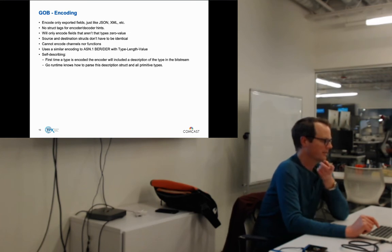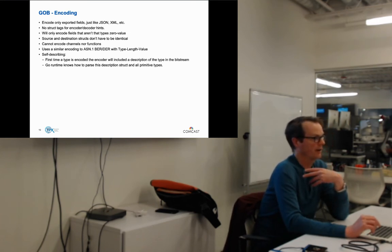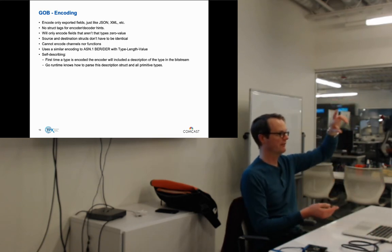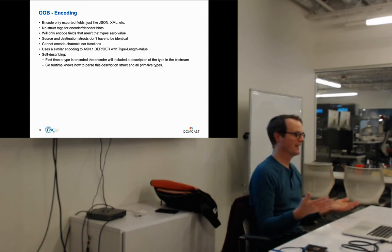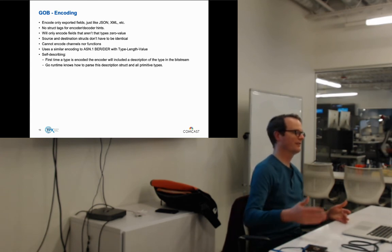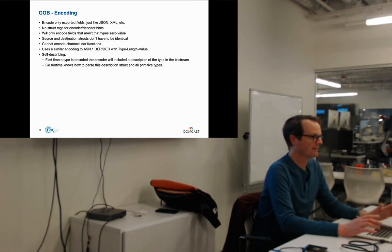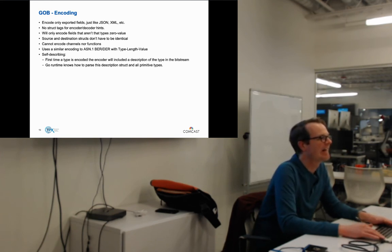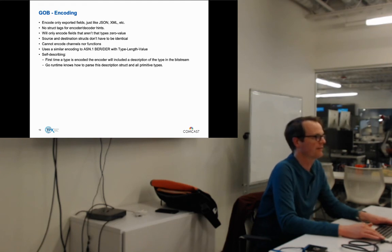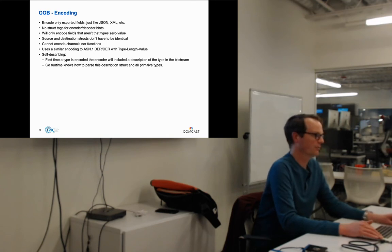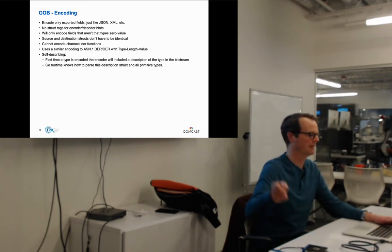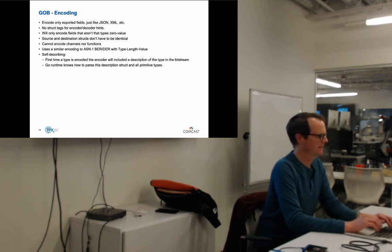Q: Would GOB preserve the difference between a nil slice versus an empty slice? A: I would imagine so, yes — I haven't dug that deep. You can't encode channels or functions, so you can't pass a closure via GOB. GOB uses a pretty similar encoding to ASN.1 — the whole type-length-value pattern where you have a type of fixed length and then the value.